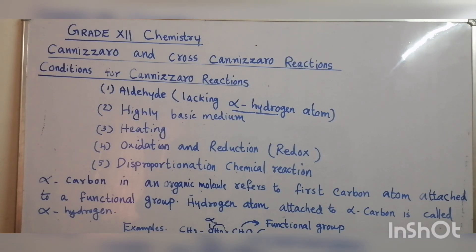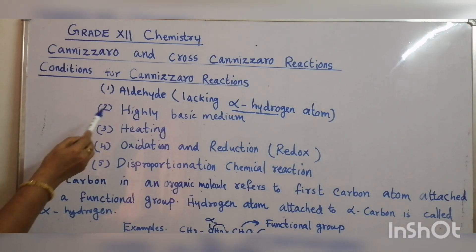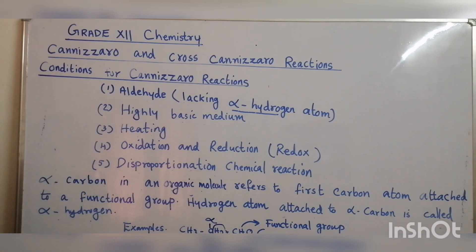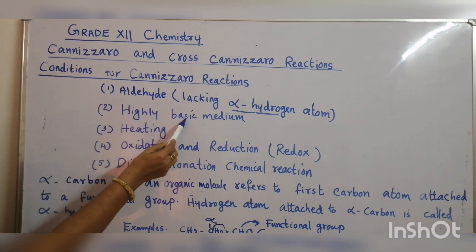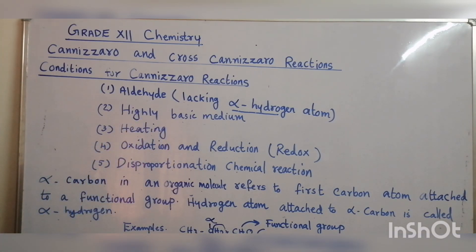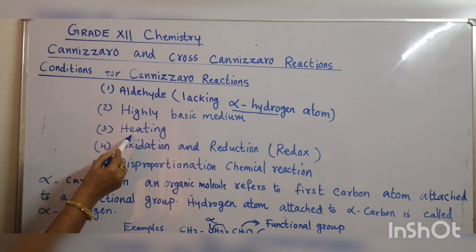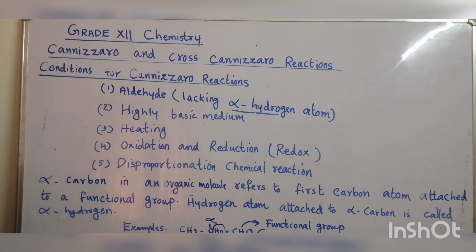Welcome to Grade 12 Chemistry — Cannizzaro and Cross-Cannizzaro Reactions. Let us see the conditions for Cannizzaro Reactions. Cannizzaro Reactions are reactions of aldehydes lacking alpha-hydrogen atoms. The reaction takes place in a highly basic medium and heating is required.